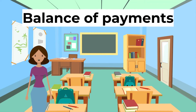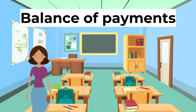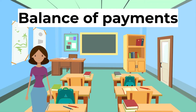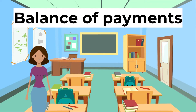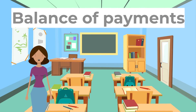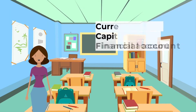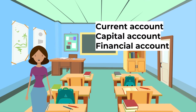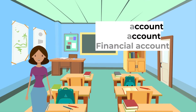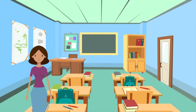The balance of payments is a record of all the monetary transactions between residents of a country and the rest of the world over a given period of time. It is divided into three main accounts: the current account, the capital account, and the financial account. We'll look at the balance of payments from the point of view of the UK.